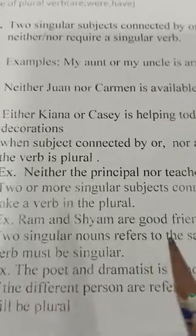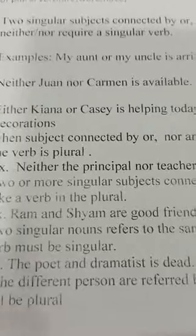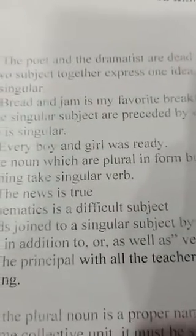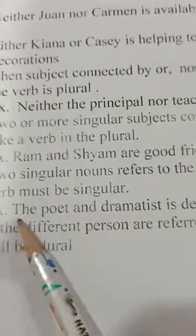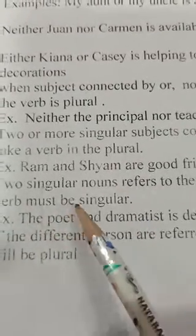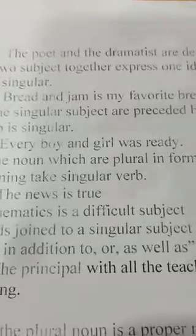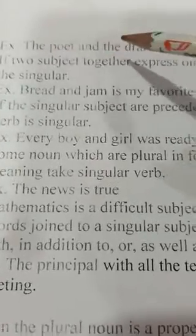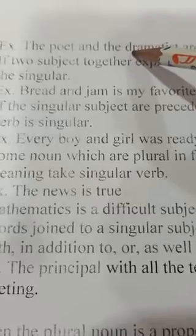But when two singular nouns refer to two different persons, the verb will be plural. How do you know they are different persons? By the use of 'the' appearing twice. 'The poet and the dramatist are dead' — here 'the' is used twice, referring to two different persons, so the verb is plural.